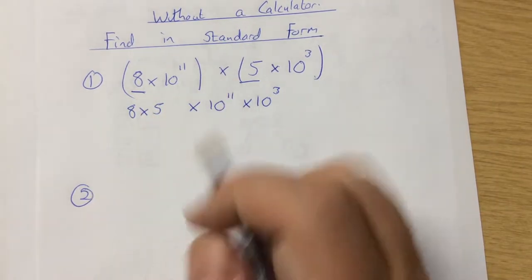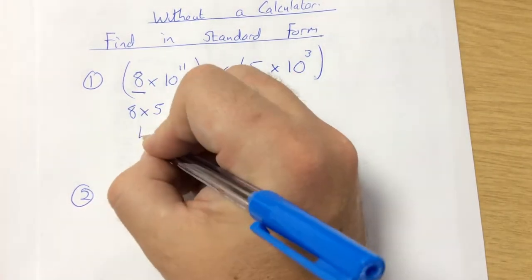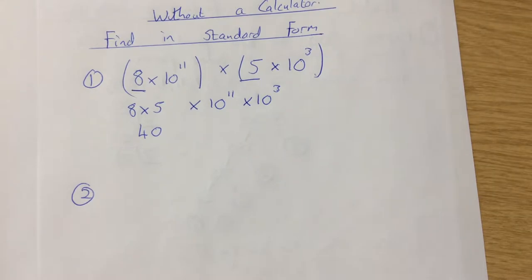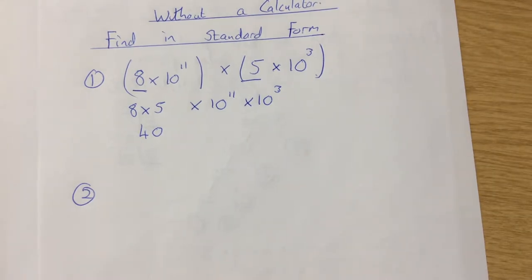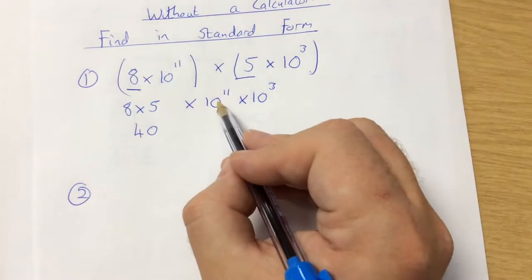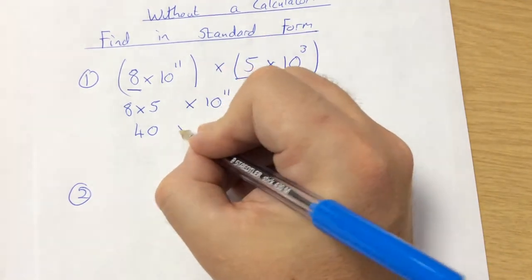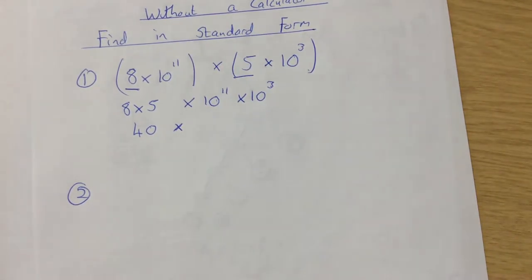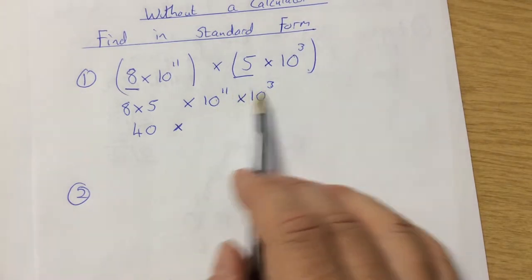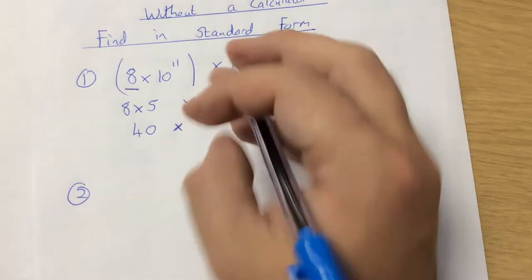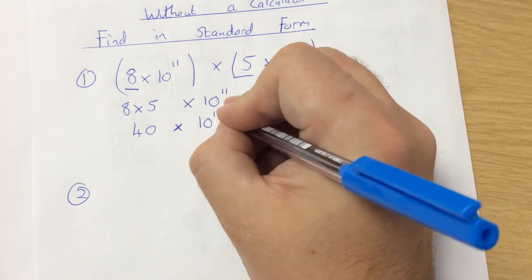So if I'm doing 8 times 5, that gives 40. And then we've got 10 to the 11 times 10 to the 3. When you've got the same base, you add the powers, so that becomes 10 to the 14.